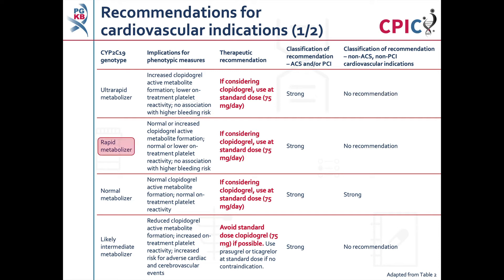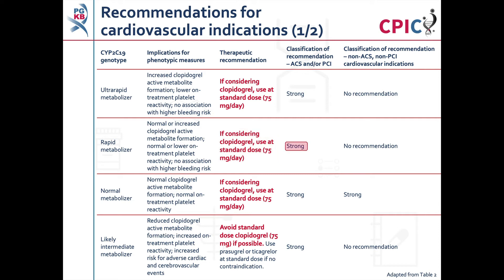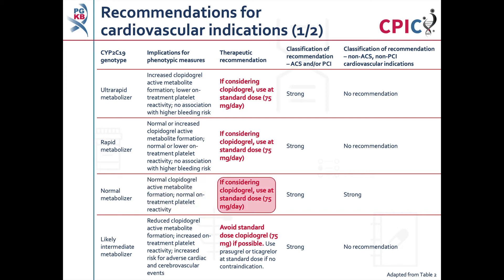Patients who are CYP2C19 rapid metabolizers have normal or increased formation of the active metabolite of clopidogrel and normal or lower on-treatment platelet reactivity. These patients can receive the standard dose of clopidogrel. This is a strong recommendation for patients being treated for ACS or PCI. No recommendation is given for CYP2C19 rapid metabolizers being treated for non-ACS or non-PCI cardiovascular indications. Patients who are CYP2C19 normal metabolizers have normal formation of the active metabolite and normal on-treatment platelet reactivity and can also receive the standard dose of clopidogrel.